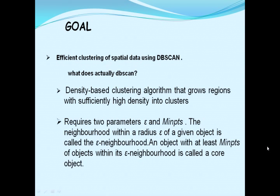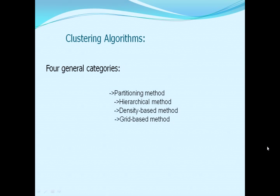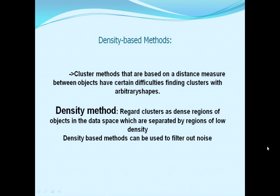Epsilon is the radius of a particular circle that it forms, and min points are the minimum number of points required. Clustering algorithms are basically classified into four categories: partitioning method, hierarchical method, density-based method, and grid-based method. DBSCAN algorithm falls into the density-based methods category.